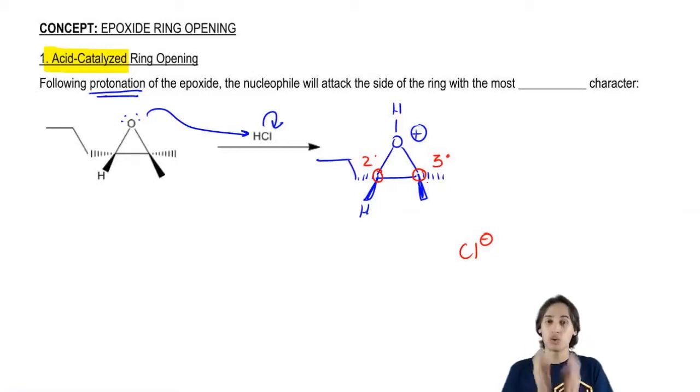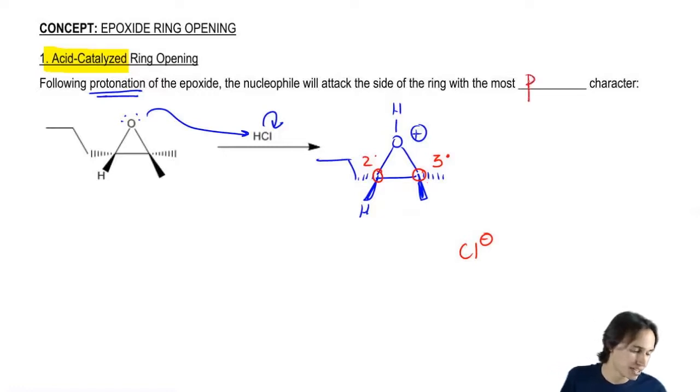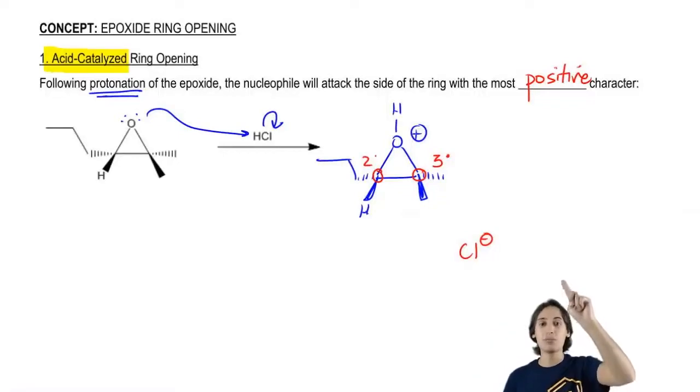The chlorine or whatever anion we're using, even if it was just a neutral nucleophile, is going to be most attracted to the side of the ring with the most positive character. We're looking at the side of the ring that could stabilize that positive charge the best. It's not a carbocation, it's just a cation, just a positive charge. But that positive charge can delocalize a little bit into those two different atoms. Which side has the most positive character, the secondary or the tertiary? The answer is the tertiary.